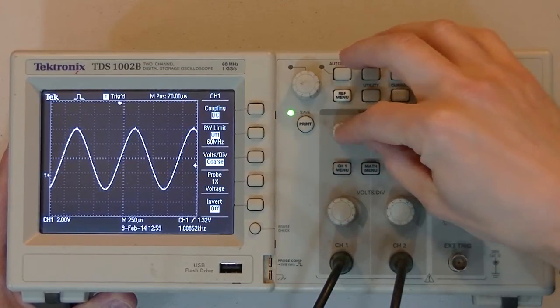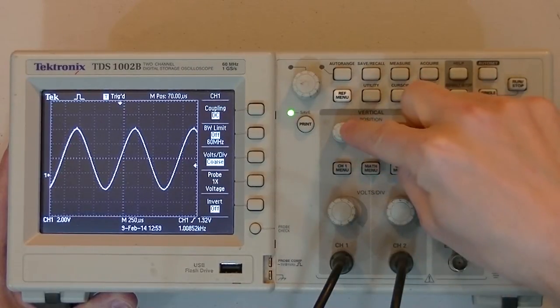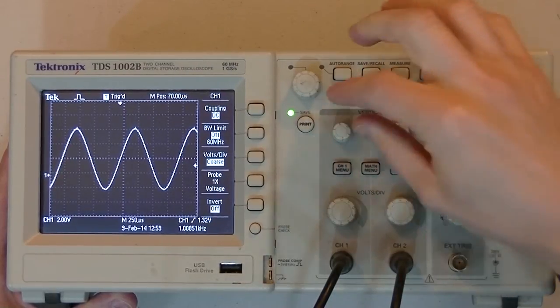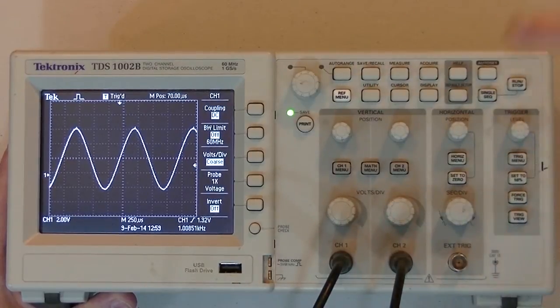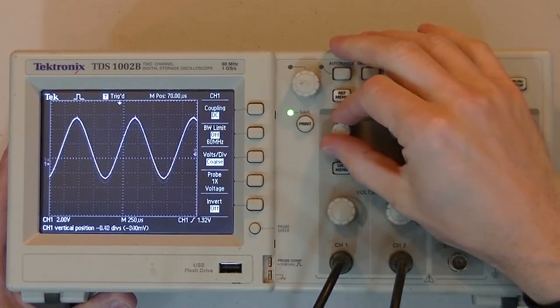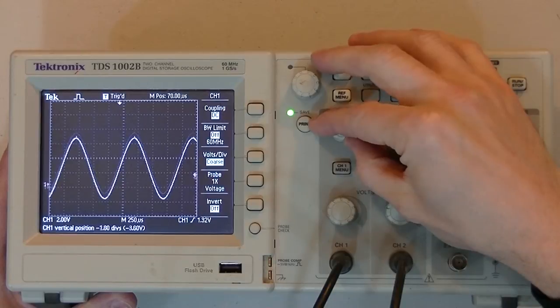So, as I change this here, you can see that the waveform is getting taller and shorter. And this is your, this smaller knob, which is typically above the big knob, allows you to adjust the position on the screen vertically. So, here I'm adjusting that up and down.